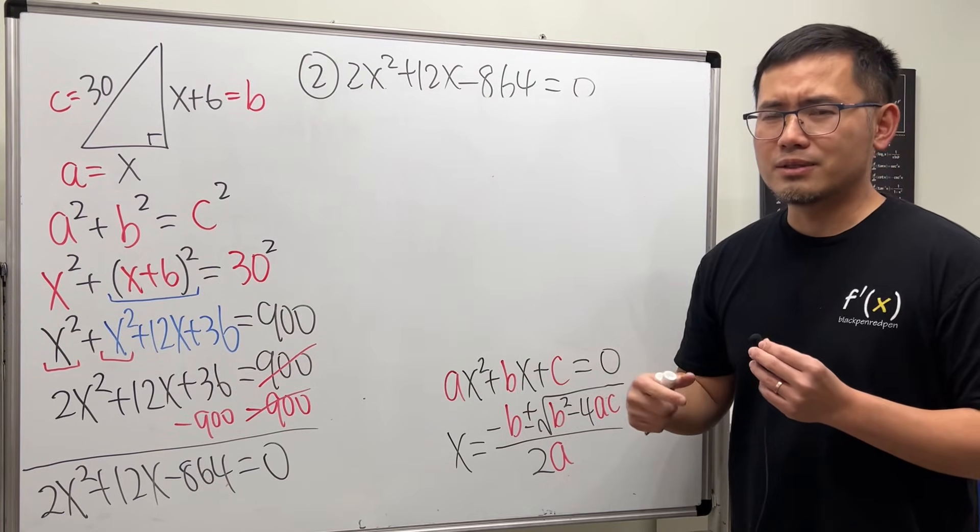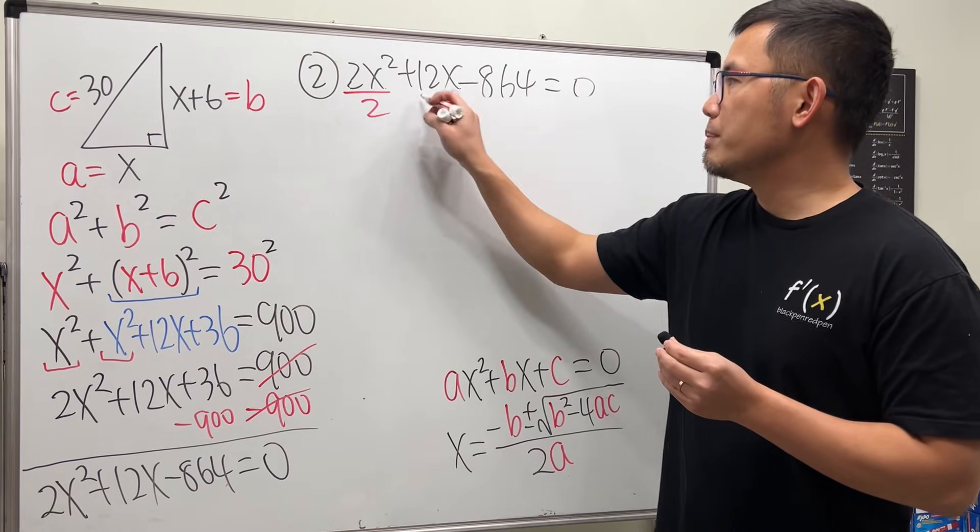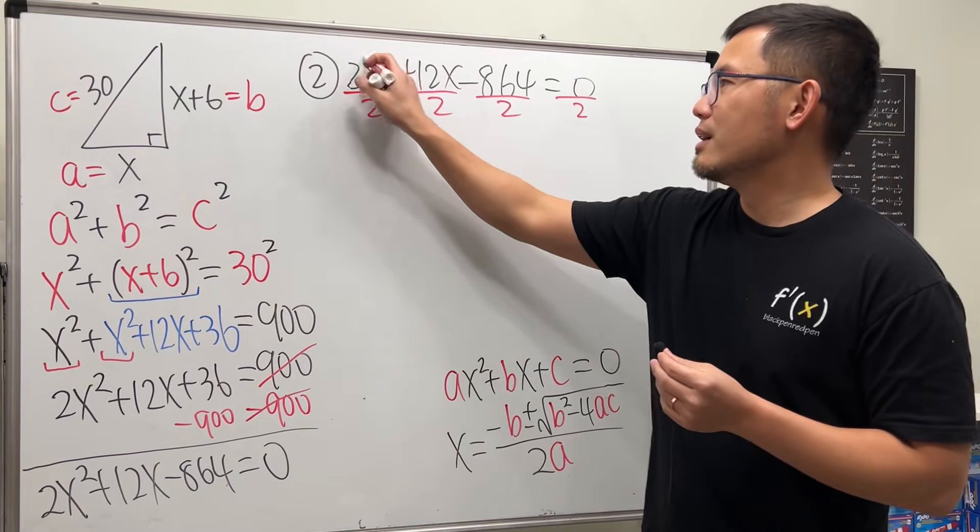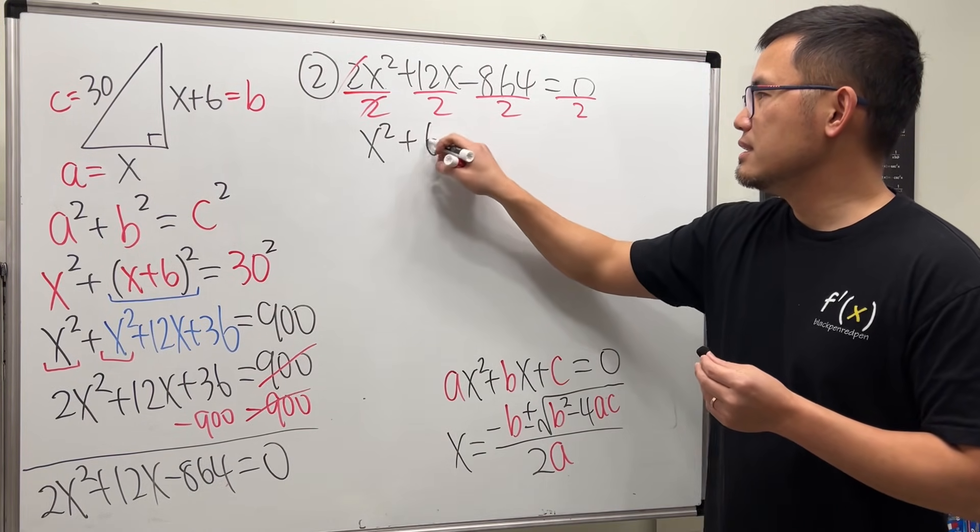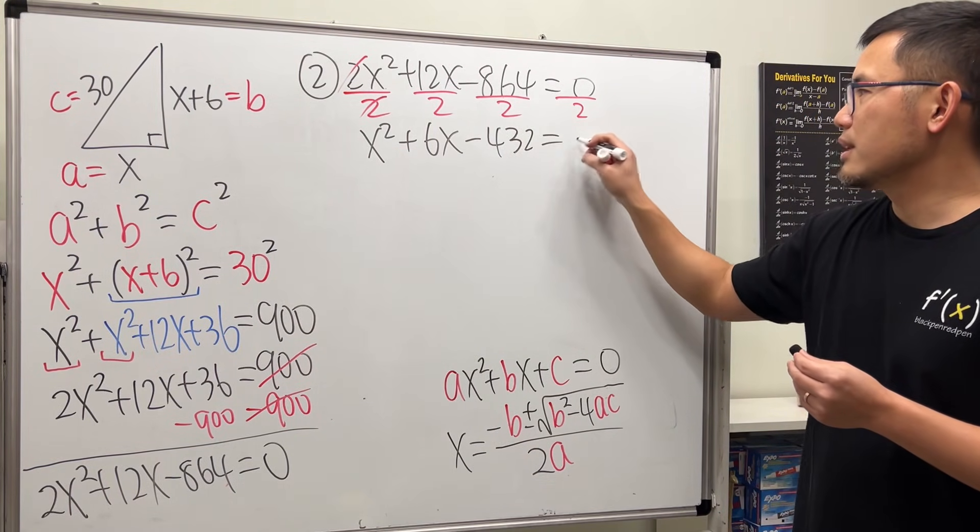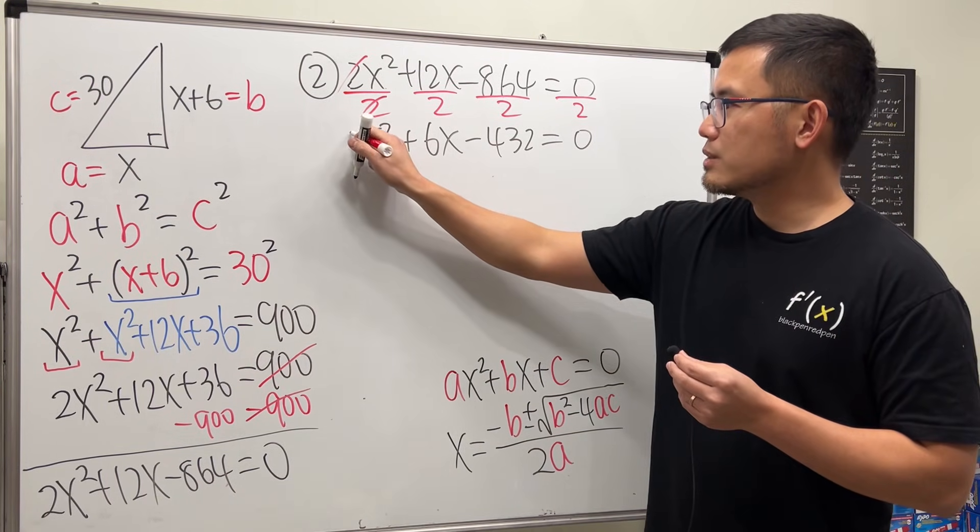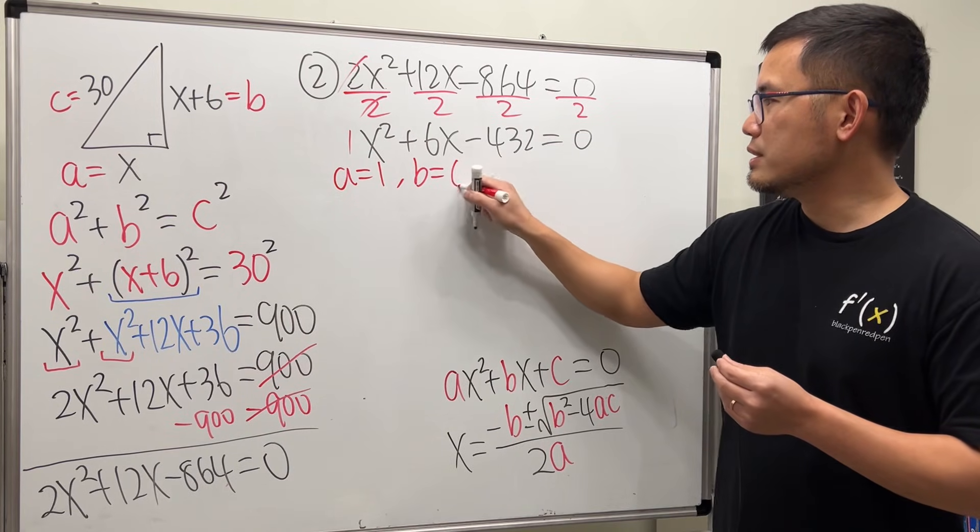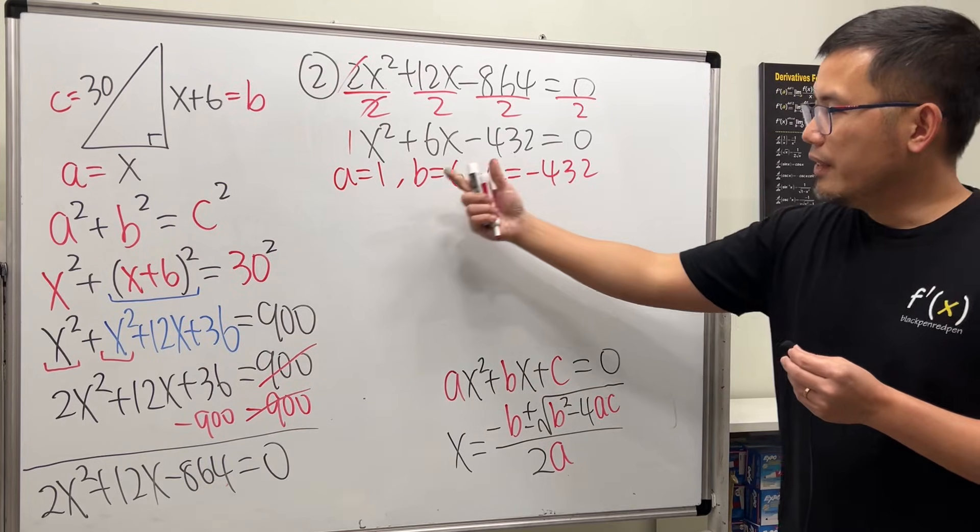So, what we can do is, just like what we did earlier, divide everybody by 2. It's that easier, not this way. That's it. And that canceled, so we get x². And then this is 6x, this is still -432 minus right here, and that's equal to 0. So, that means a is 1, right? a = 1. b is this number, which is 6. And c is -432.